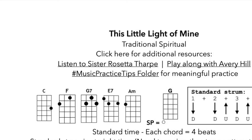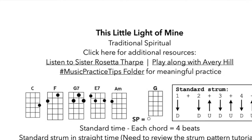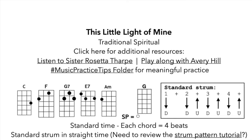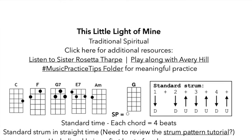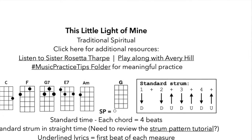When you open up that file, you'll see the title at the top. It's a traditional song, and I have some hyperlinks in here. Because they are PDFs, you can hover your mouse directly over any underlined text, and it'll take you to either a video or another folder within the bigger Google Drive folder. For 'This Little Light of Mine,' one link says 'Listen to Sister Rosetta Tharpe' — click on that and it takes you to a YouTube video of her recording. Another says 'Play along with Avery Hill,' which takes you to the video tutorial I made. And 'Music Practice Tips Folder' takes you to another folder with extra practice tips.